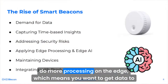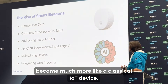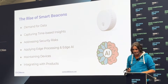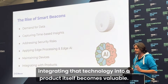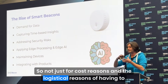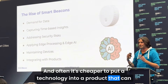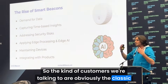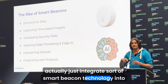Once you have communication and data, you want to do more processing on the edge, which means getting data to train models, being able to maintain devices, being able to do OTA updates — they basically become much more like a classical IoT device. And a lot of people have thought of beacons as discrete devices, but as they get smarter it becomes more apparent why integrating that technology into a product itself becomes valuable — not just for cost or logistical reasons, but because you can tap into the internals of a product.